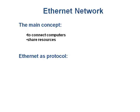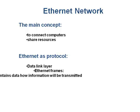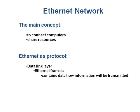Ethernet is a protocol or standard that works together to define the physical and data link layers of a network. The Ethernet protocol in the data link layer uses an Ethernet frame. An Ethernet frame is a data packet that contains rules on how and when data will be transmitted from source to destination into the physical network.